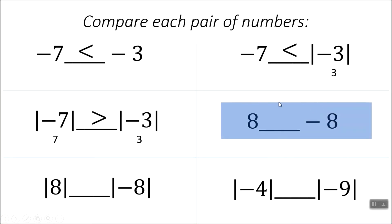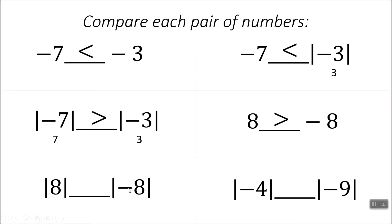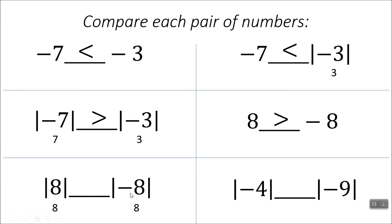Now we don't have any absolute value bars, so we're taking them as they are. 8 is positive, this is a negative 8 — the positive is always bigger than the negative. Now we're doing the same problem but with absolute value bars around both of them. 8 walks out of the absolute value bar positive. Negative 8's distance from 0 is 8 — it comes out of the bars positive. Those two, their distances from 0 are the same. The absolute value of 8 is equal to the absolute value of negative 8.